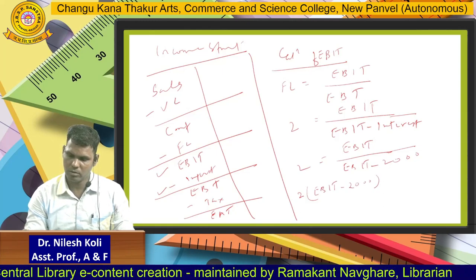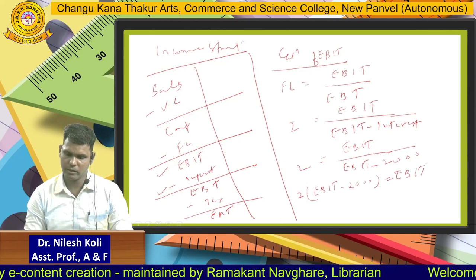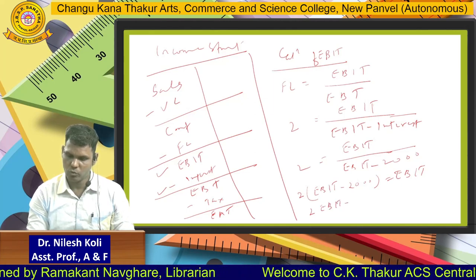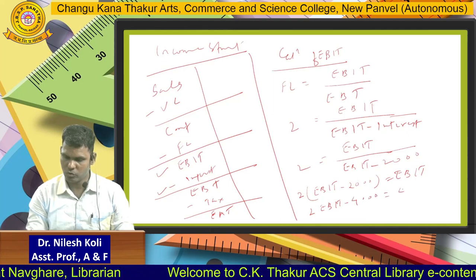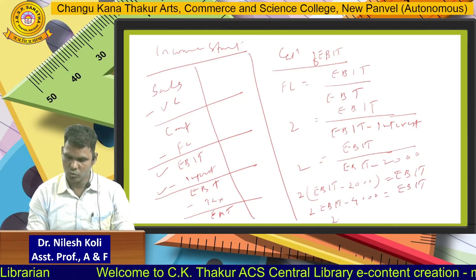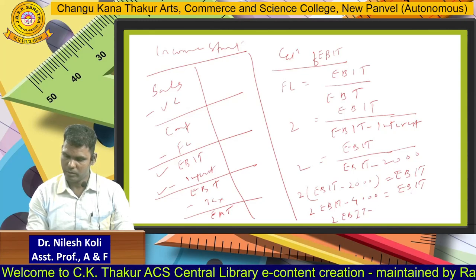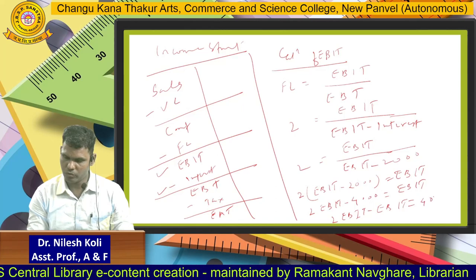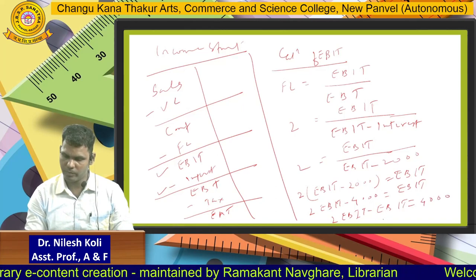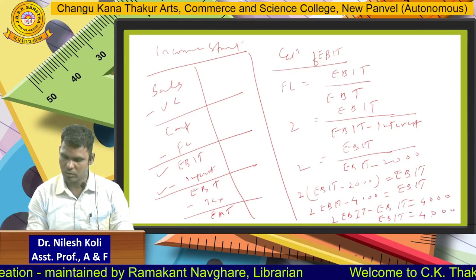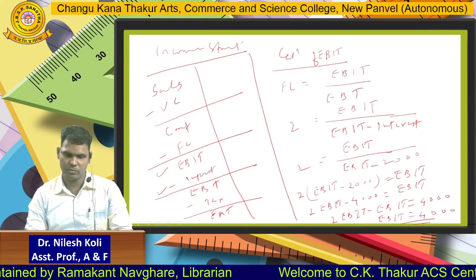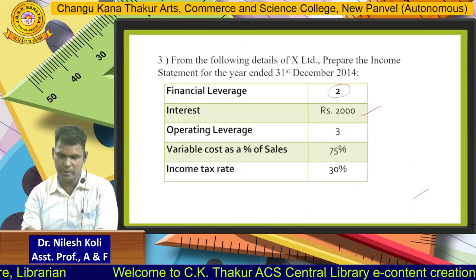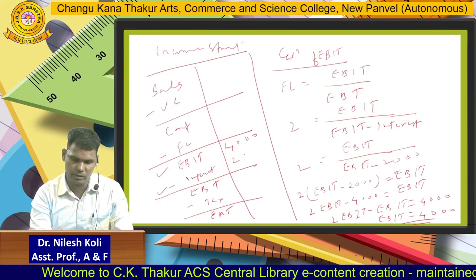Simplifying: 2 into (EBIT minus 2000) = EBIT, so 2 EBIT minus 4000 = EBIT. Shifting EBIT to the left side: 2 EBIT minus EBIT = 4000, therefore EBIT = 4000. So EBIT is 4000. Interest given is 2000, so deducting interest from EBIT: EBT = EBIT minus interest = 4000 minus 2000 = 2000.